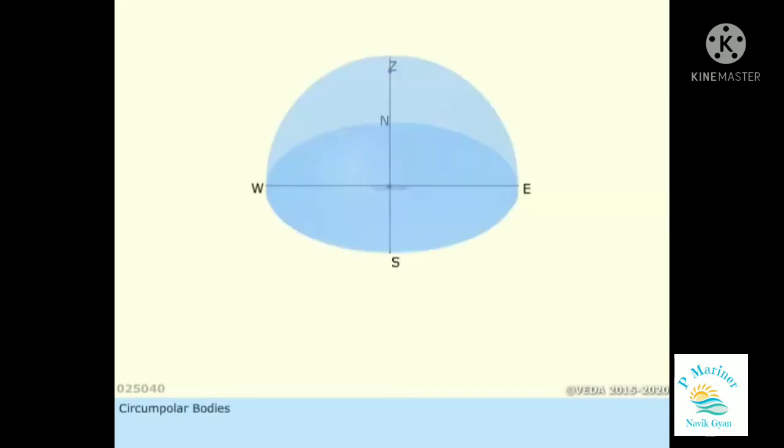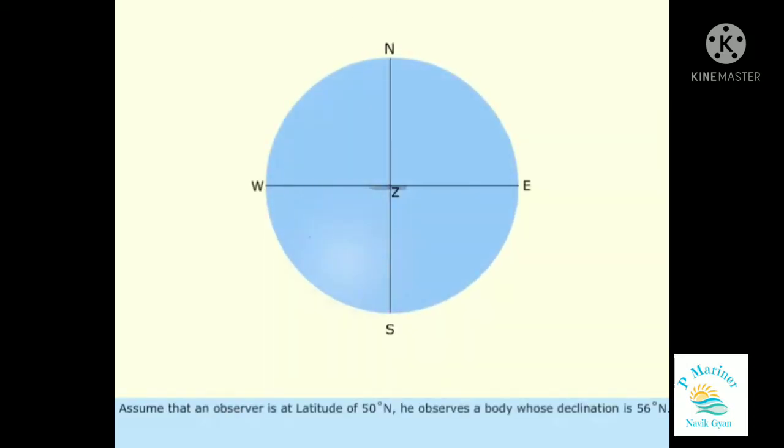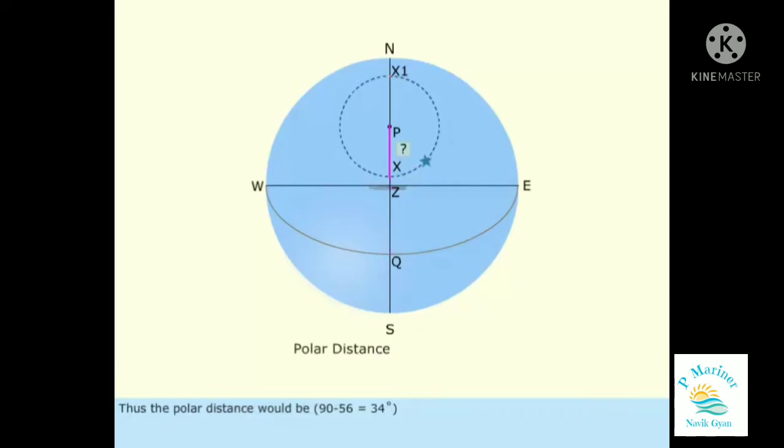Circumpolar bodies. Assume that an observer is at latitude of 50 degrees north. He observes a body whose declination is 56 degrees north. Thus, the polar distance would be 90 minus 56, which equals 34 degrees.